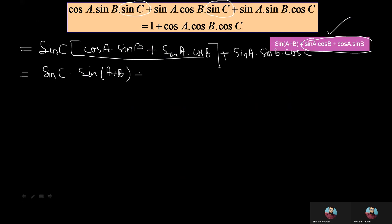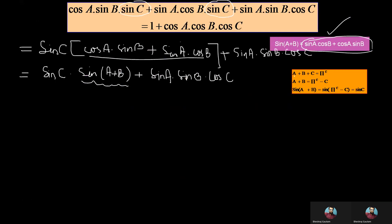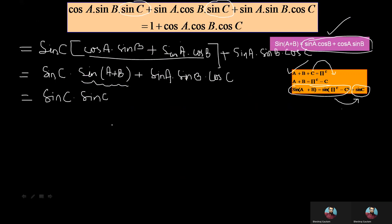The remaining part is sinA·sinB·cosC. Now, as we know, sin(A+B) using the given information can be written as sinC. We take angle C on the right-hand side, so A+B equals pi minus C, and keeping sin on both sides, we express sin(A+B) as sinC. So we write sinC·sinC in place of sin(A+B), plus the remaining sinA·sinB·cosC.